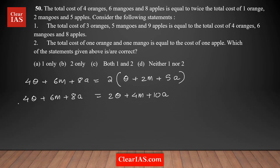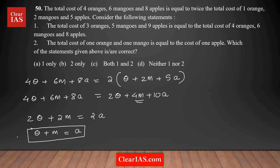Combining like terms — taking O to the other side gives 2O, taking M to the other side gives 6M minus 4M which is 2M, and taking A to the other side gives 10A minus 8A which is 2A. Dividing by 2 on both sides gives us: cost of orange plus cost of mango is equal to cost of an apple. This is the simplified equation we know from the statement given.